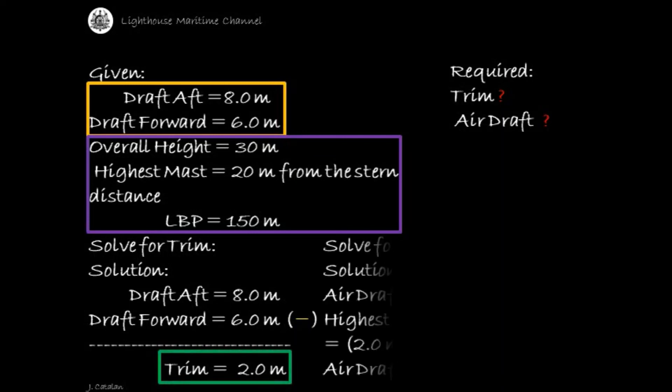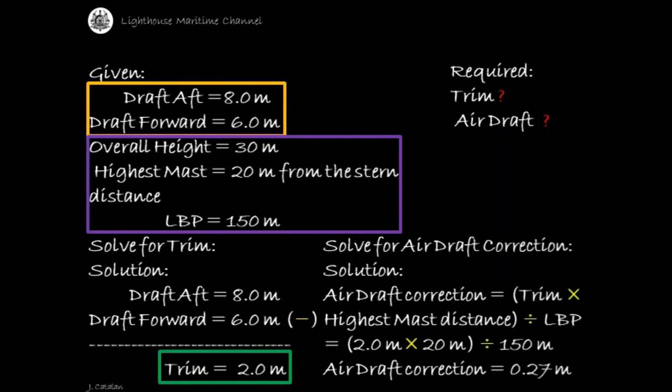Solve for air draft correction. Solution: air draft correction = trim × highest mast distance ÷ length between perpendiculars. Substituting values: (2.0 meters × 20 meters) ÷ 150 meters. The result is the air draft correction, which is equal to 0.27 meters.